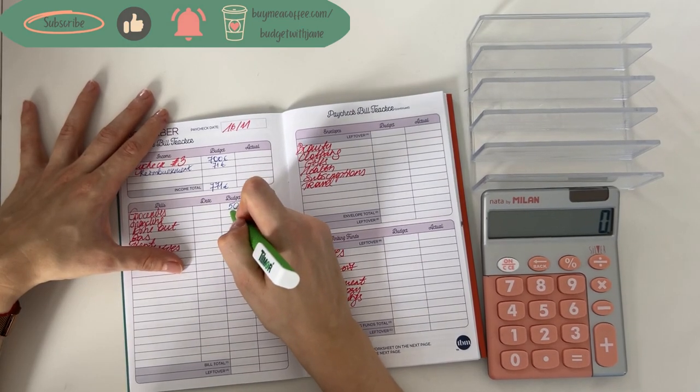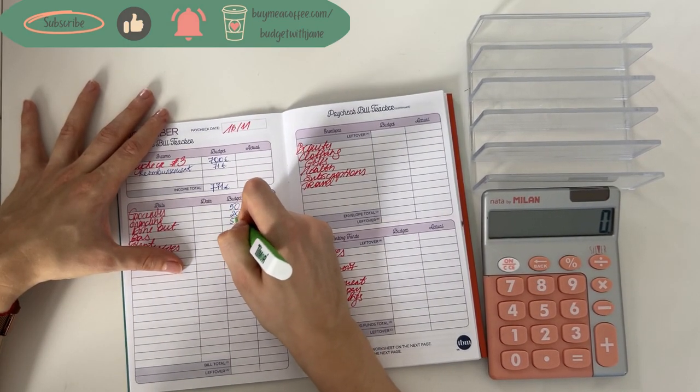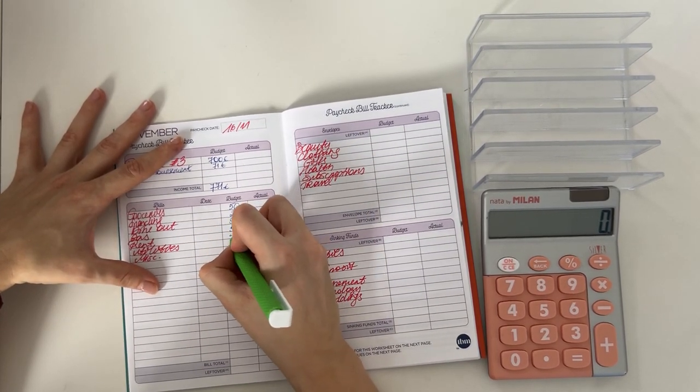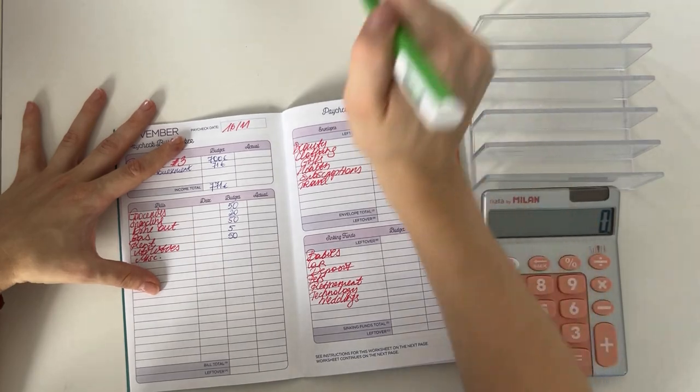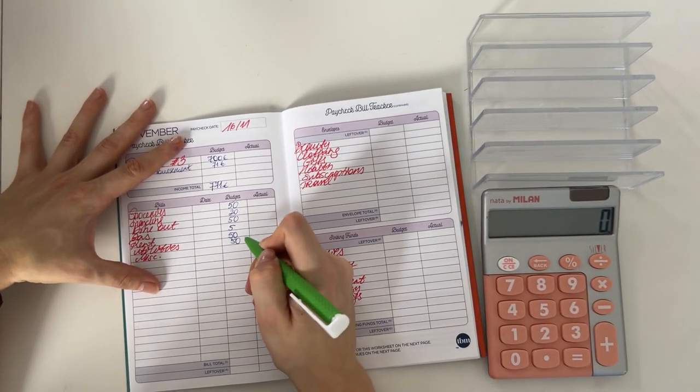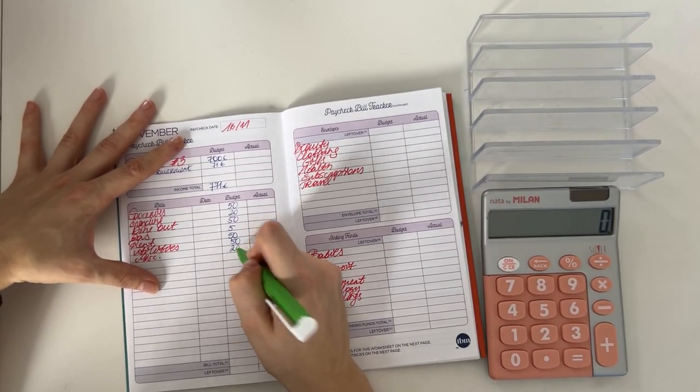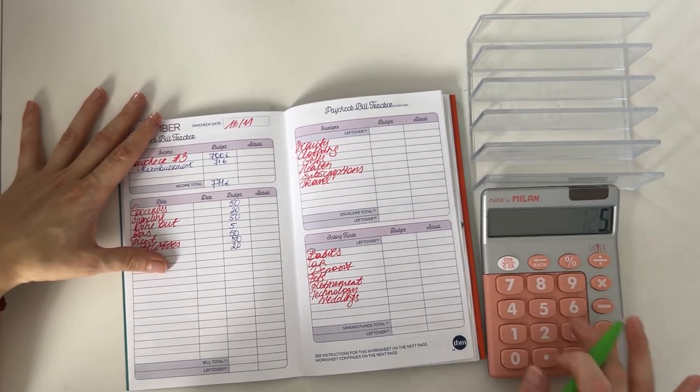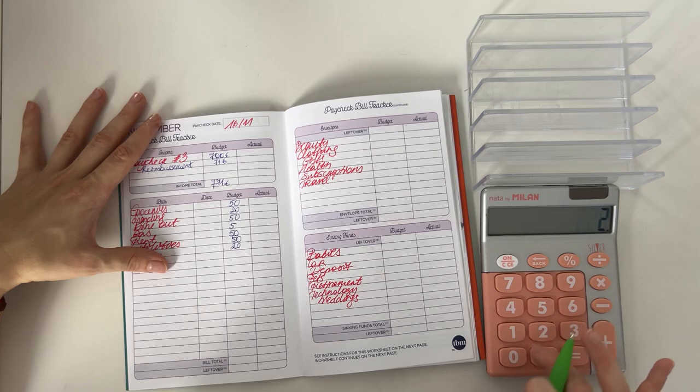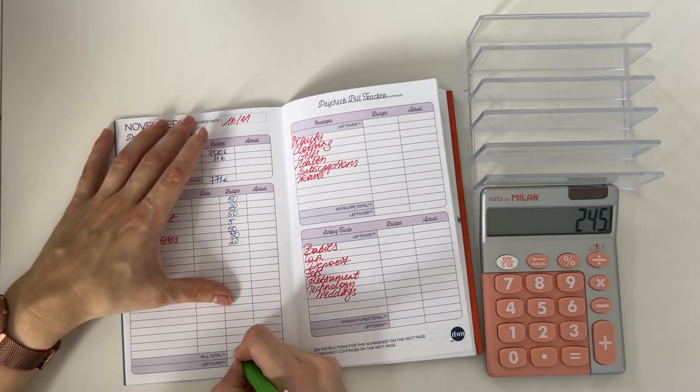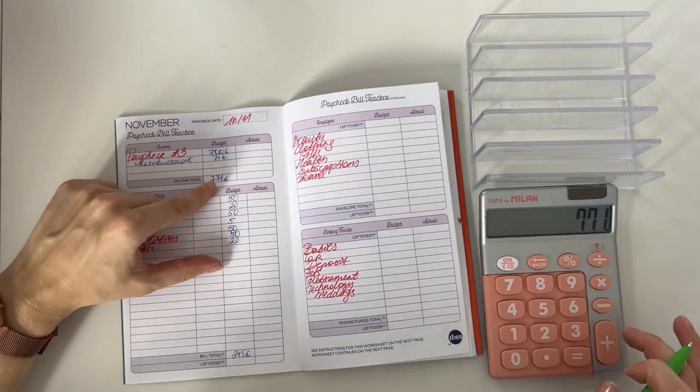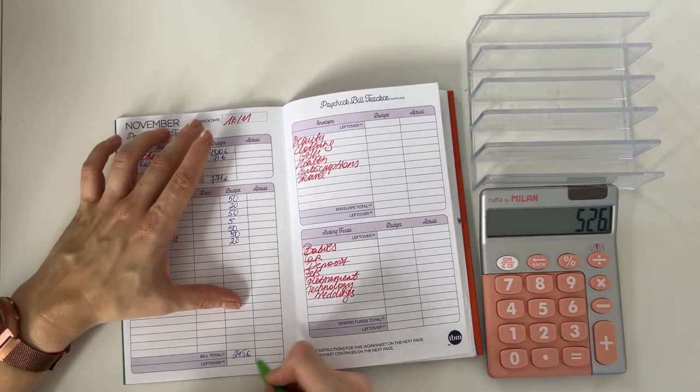We're going to put 50 in groceries, 20 in spending, and 50 in dine out. I'm going to add 5 to gas, rent is going to get 50, utilities is going to get 50, miscellaneous will get a 20. So 50 plus 20 plus 50 plus 5 plus 50 plus 50 plus 20 is 245 going in cash envelopes. 771 minus 245 is 526, we are bringing that here to short-term sinking funds.